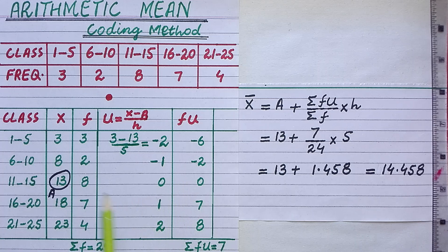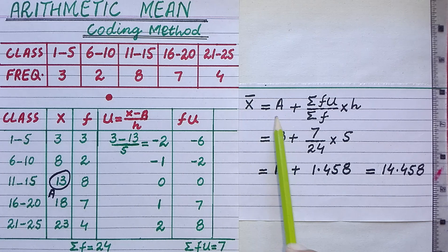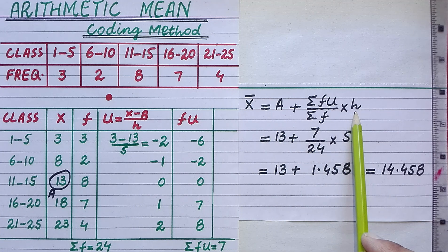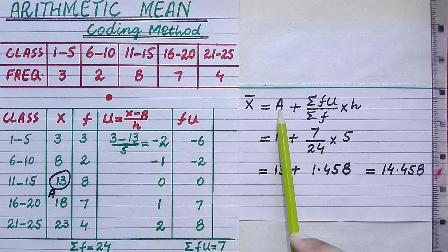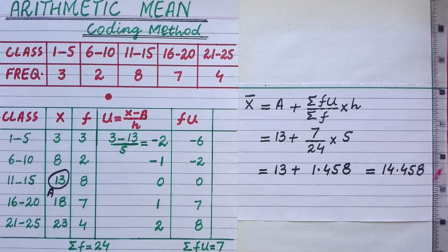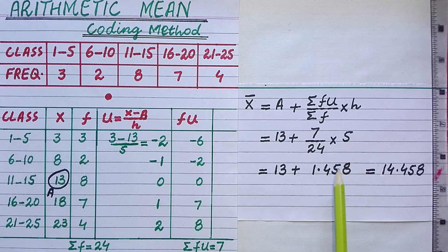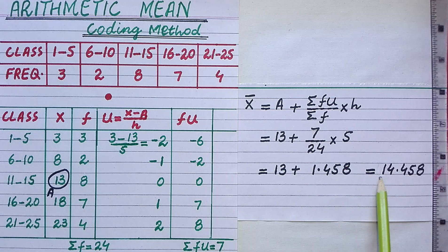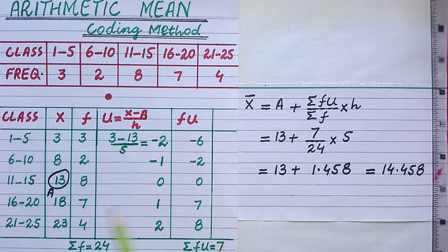We add all values of f to find Σf, and all values of fu to find Σfu. Then we apply the formula x̄ = a + (Σfu / Σf) × h, substituting the values of a, Σfu, Σf, and class size h = 5. After simplification, we find the arithmetic mean of the given grouped data.